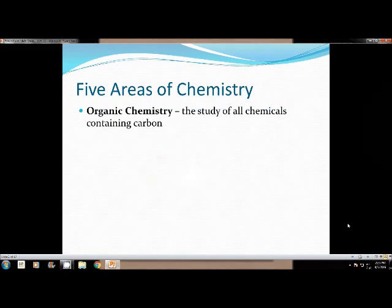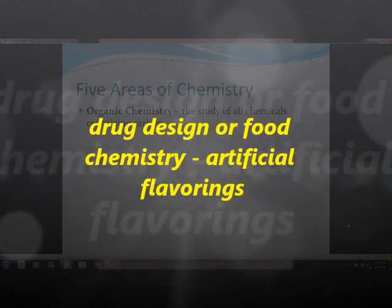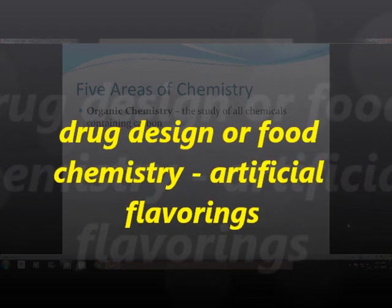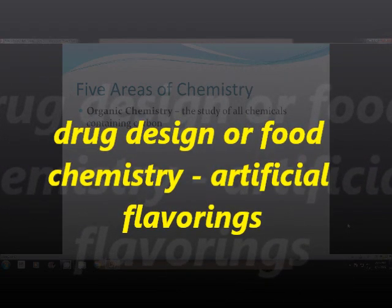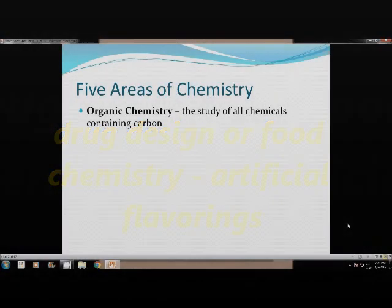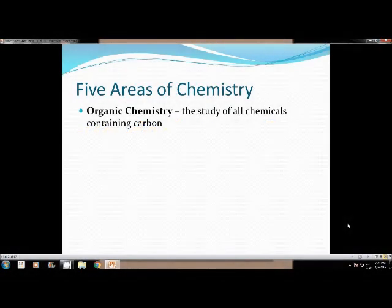Organic chemistry examples - pick one to write down or shorten what I say. First example would be drug design, medicines that we take, cancer research, anything like that with medicine to help us get better. Those are all ways that we can use organic chemistry. Another one is food chemistry. A lot of the artificial flavorings that we have in our food nowadays or the way that food's processed is a type of organic chemistry.